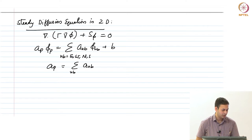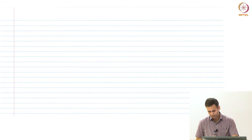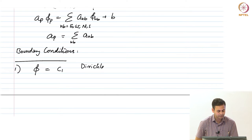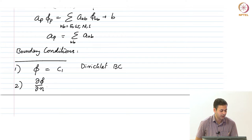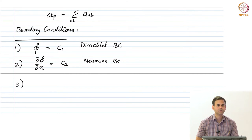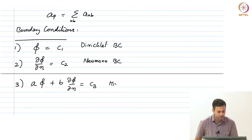We have to discuss the boundary conditions in today's lecture. You can have three types of boundary conditions. You could specify the value of the dependent variable itself — that is phi equals some constant. This is known as a Dirichlet boundary condition. You can also specify the gradient of the dependent variable: partial phi partial N equals a constant. This is known as a Neumann boundary condition. You can also have a mixed boundary condition — a combination of Dirichlet and Neumann — for example, A times phi plus B times partial phi partial N equals some C3.